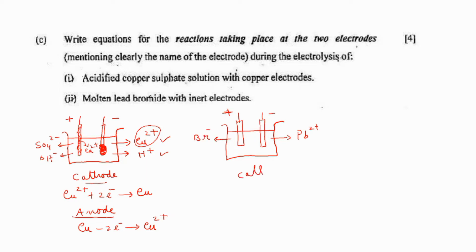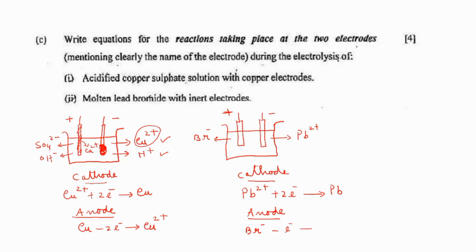Write the cathode reaction. Since only one ion is there, there is no competition at all — it is so easy. Pb²⁺ ion will be moving towards the cathode, it will be accepting two electrons and will be deposited as lead metal. At the anode, Br⁻ ion will be moving towards the anode, it will give away one electron and be converted into a bromine atom. Two bromine atoms will combine to form bromine vapors. So you can see a gray metal deposit at the cathode, whereas reddish brown vapors of bromine will be evolved at the anode.